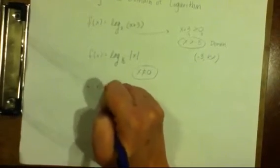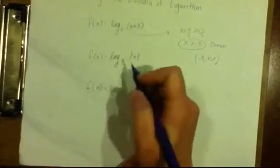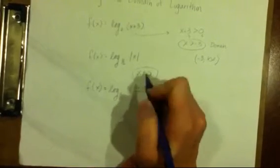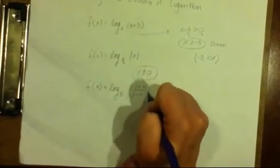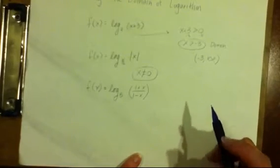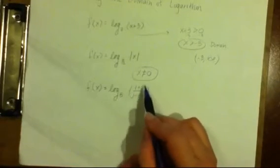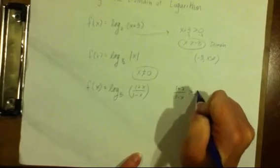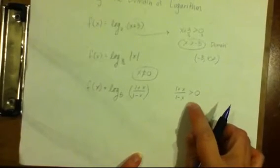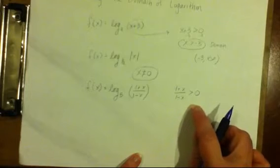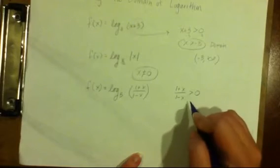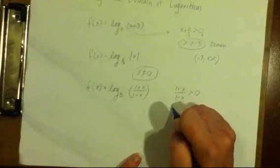This last example is harder, and it's based on something we actually learned in the last chapter. So just like we did in the first problem, we're going to take what would be plugged into the logarithm, and we're going to set that greater than 0. But that means we are solving a rational inequality. So if you remember from our last chapter, what we then have to do to solve this is to find our critical values.